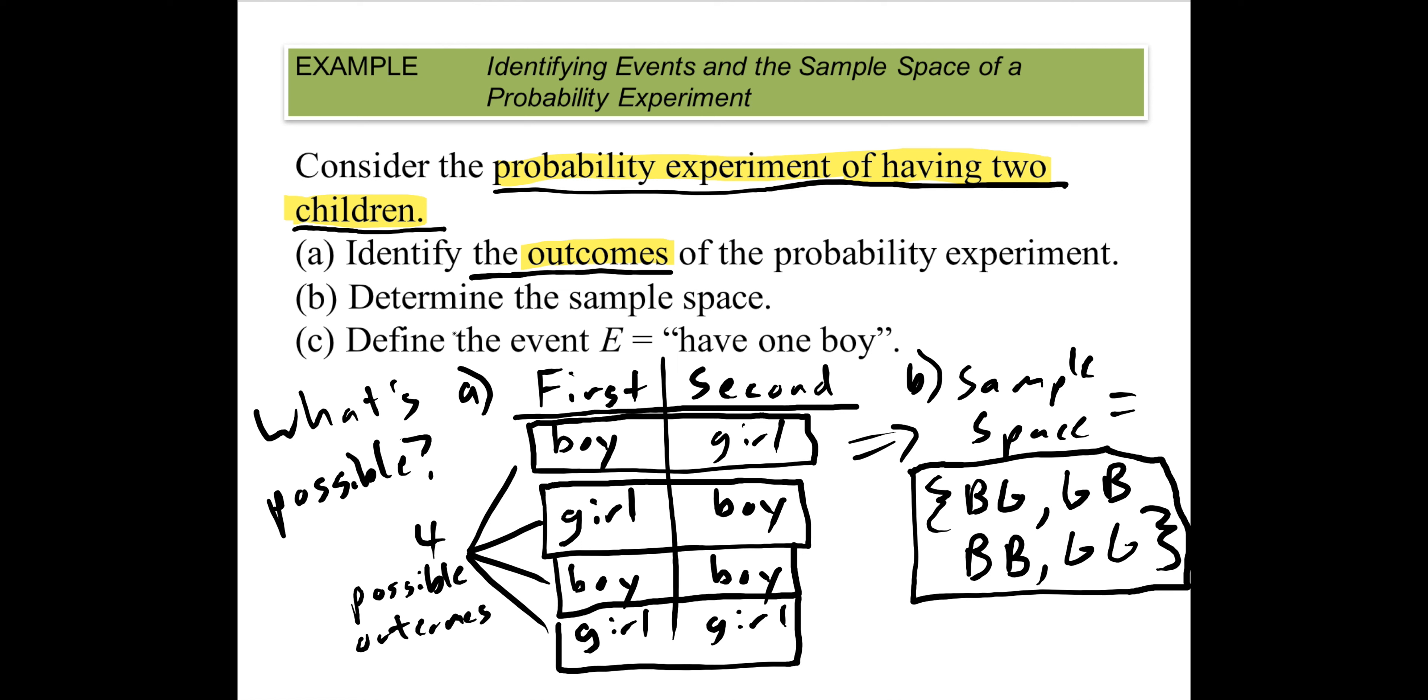Then part (c) says define the event where they're saying that event means you have one boy. Let's be very clear here: when they say 'one' they mean exactly one. So what is that? Boy-girl would do it, girl-boy would do it. There's two ways we could have one boy—we could either have the boy first or the boy second. That is it.